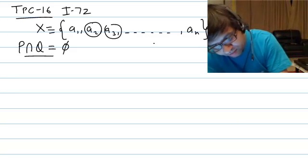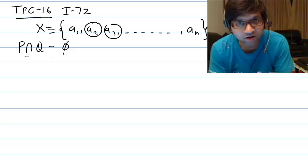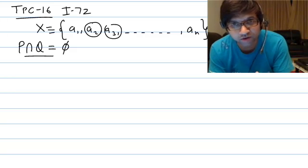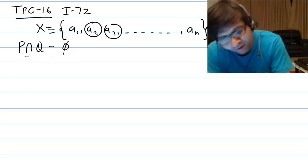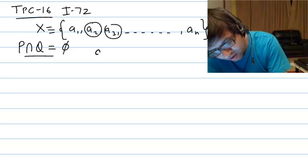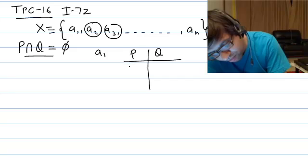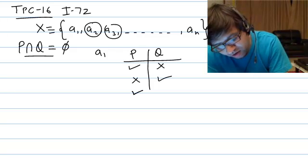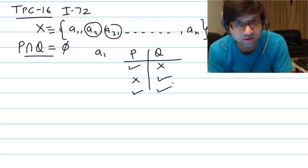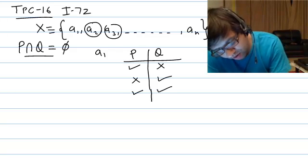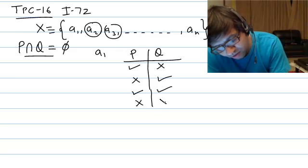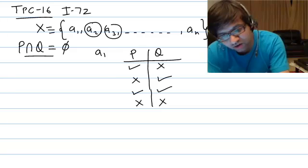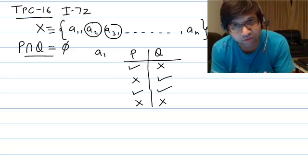We divide the job of forming subsets P and Q into n jobs — we decide about every element from a1 to an. For any element, there are four options: it can go in P but not Q, it can go in Q but not P, it can go in both P and Q, or it is selected in neither P nor Q. These are the four possible options for each element.